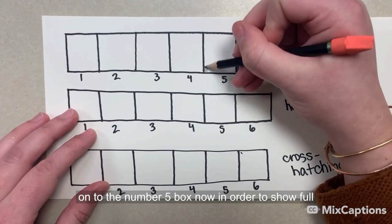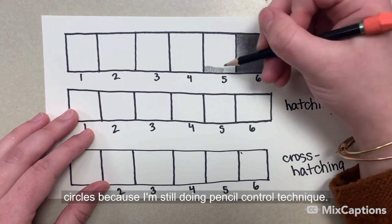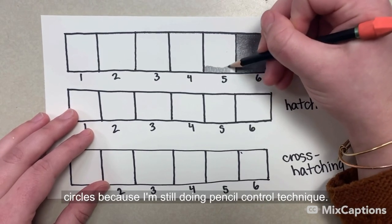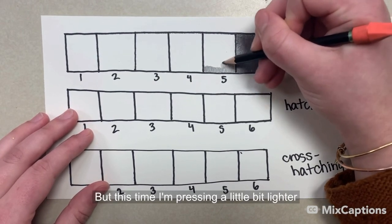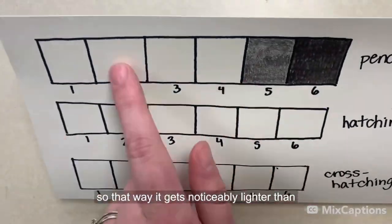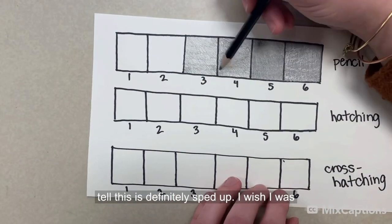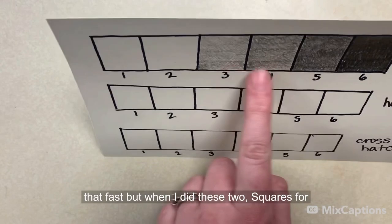Now in order to show full value range, I'm going to still use small overlapping circles because I'm still doing pencil control technique. But this time I'm pressing a little bit lighter, so that way it gets noticeably lighter than the one before. I'm continuing on. And as you can tell, this is definitely sped up. I wish I was that fast.